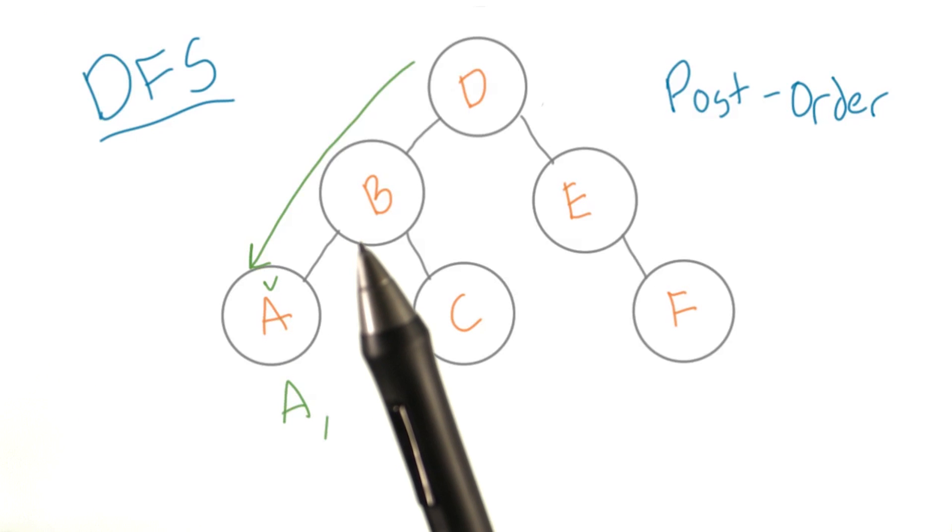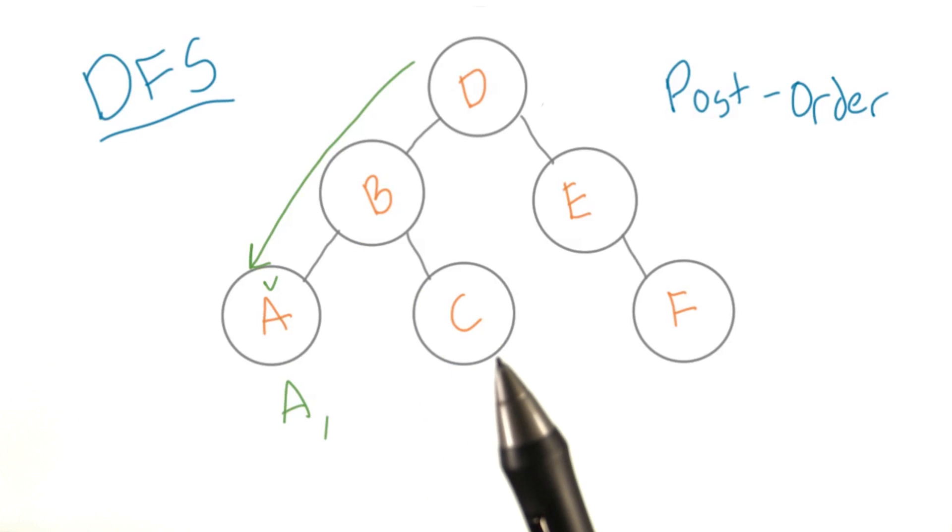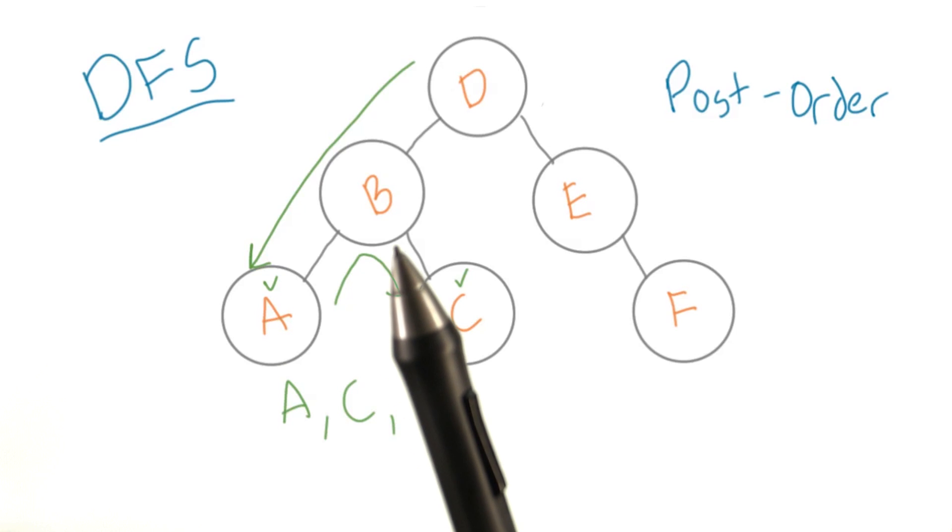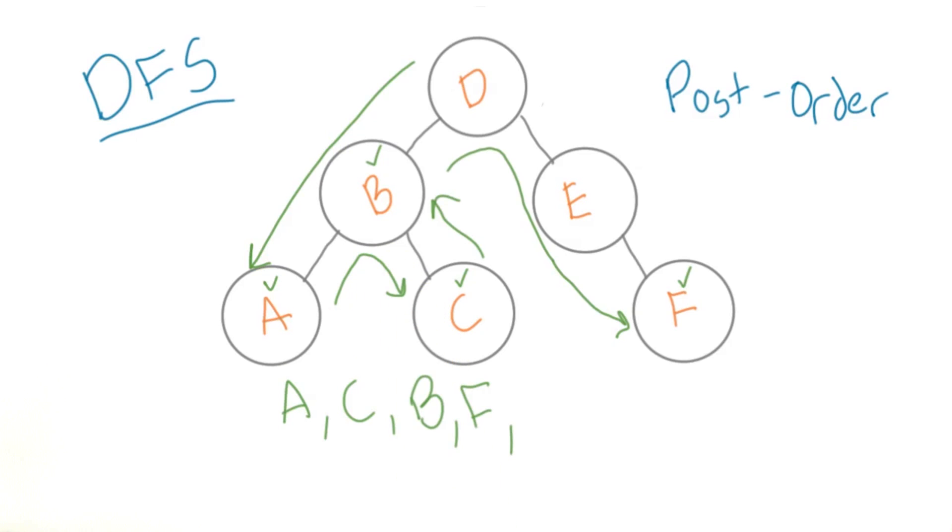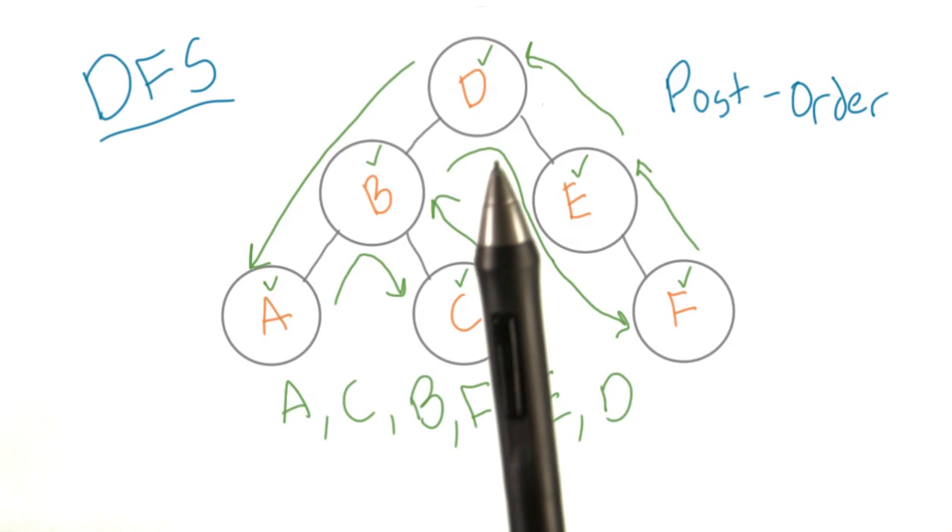This time, we don't check off the parent though. We just move on to the right node. Once we've checked off the right child, we can go back up to the parent and finally check it off too. Again, we'll skip over the root node and just move all the way down to the right. Once everything there is good, we can move back up to the root and get it.